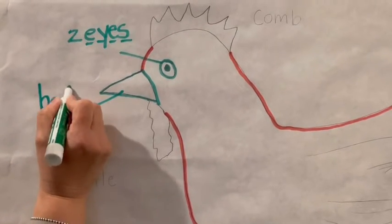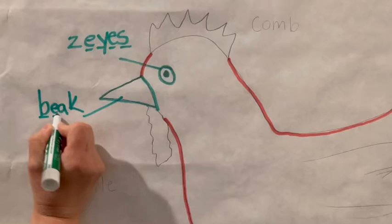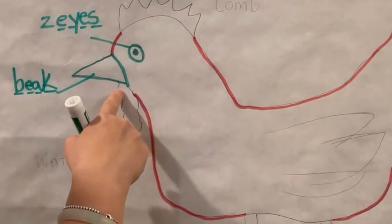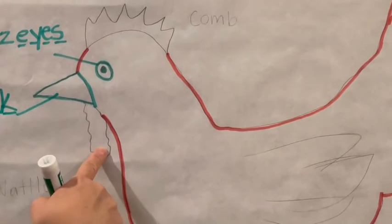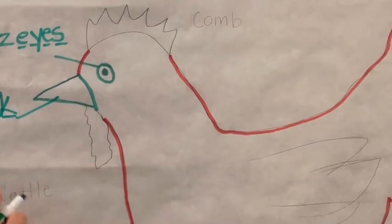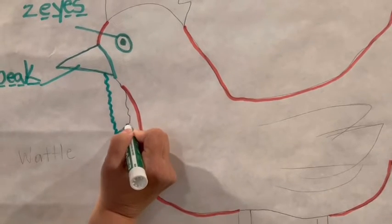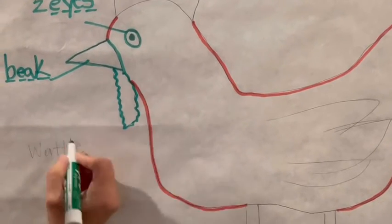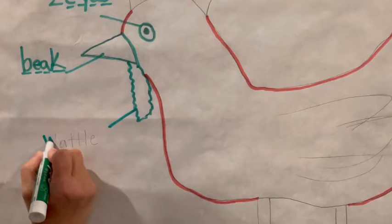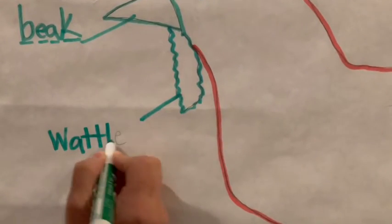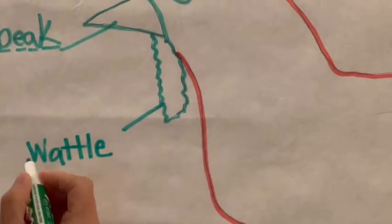And this little funny looking thing that hangs right underneath the beak is called a waddle. A little waddle. W-A-T-T-L-E. Waddle.